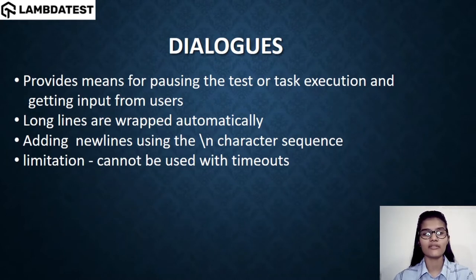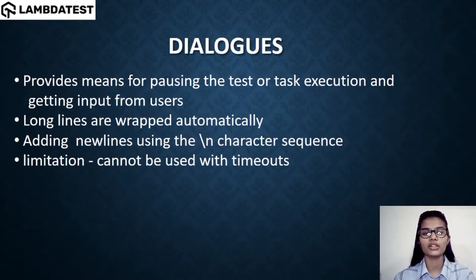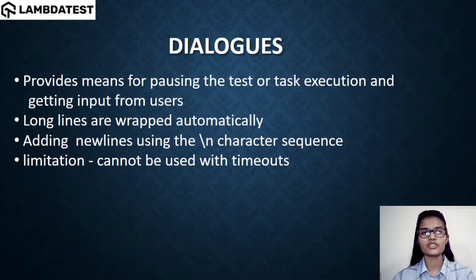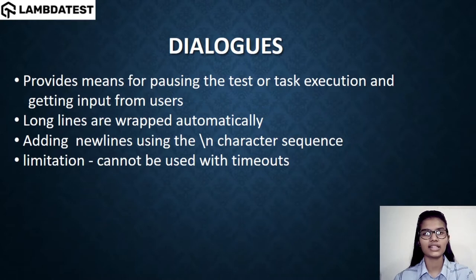In the Dialogues library, long lines are wrapped up automatically. Whenever you want to add a new line in your test, you simply use the backslash-n character. If you're familiar with Python, you'll have heard about backslash-n a lot because it helps you make a new line. The same applies here — use backslash-n to add things onto a new line.